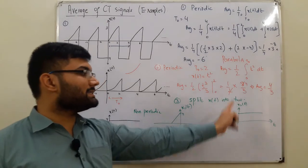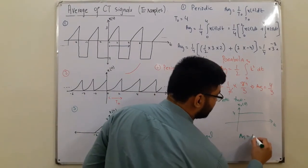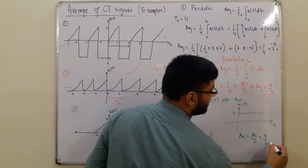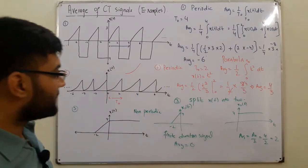And have a look at this. This is a step signal, and we've seen for the step signal that the average is equal to a naught by 2. And in this case, a naught is 4, so 4 divided by 2, the average would be 2.